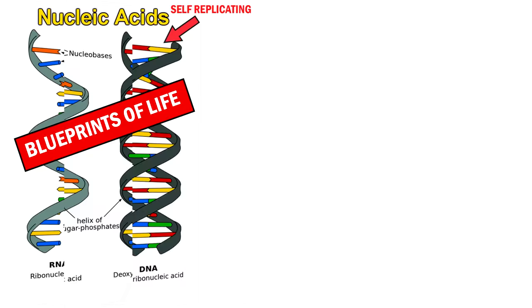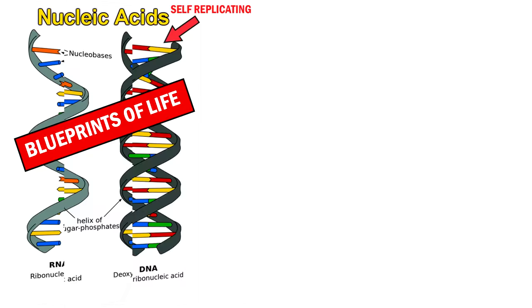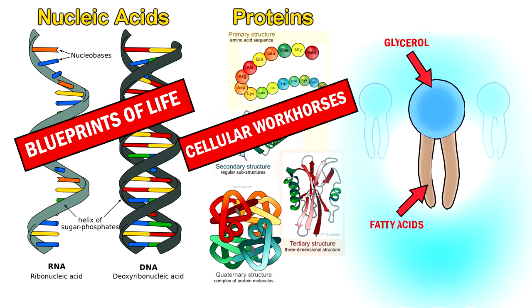Despite the incredible variations we see today, at the fundamental level all living things contain a trinity of elements. First, nucleic acids, which make up the DNA or its simpler form called RNA — these contain the blueprints of life and are self-replicating molecules. Second, proteins, which are the workhorses that perform the important functions of your body. And third, lipids, which encapsulate the cells of your body.